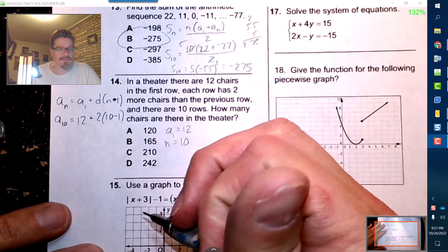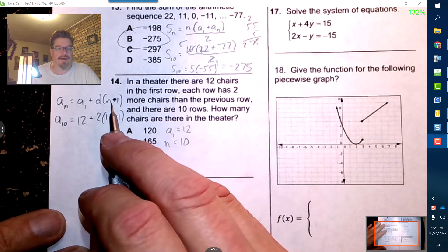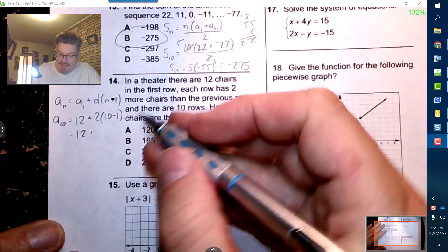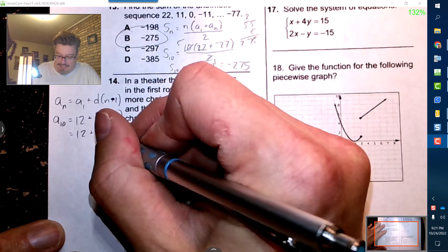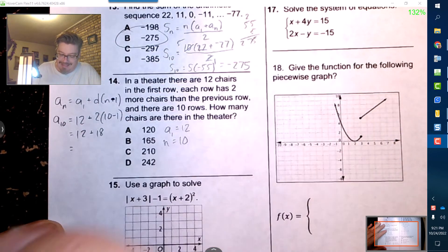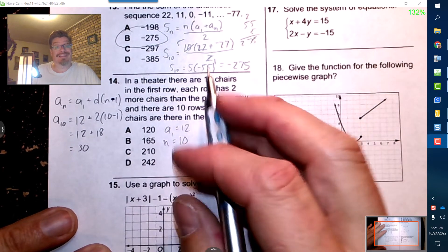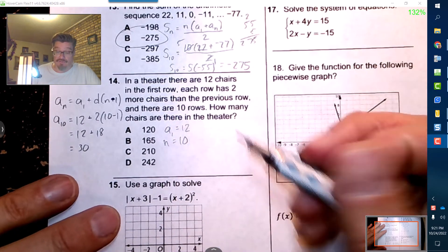You're probably screaming at the video when you saw that. Well that's good. All right, so we got 12 and then plus 2 times 9 is 18, so it looks like in that last row we're going to have 30. All right, so now I'm ready to go back to this formula.